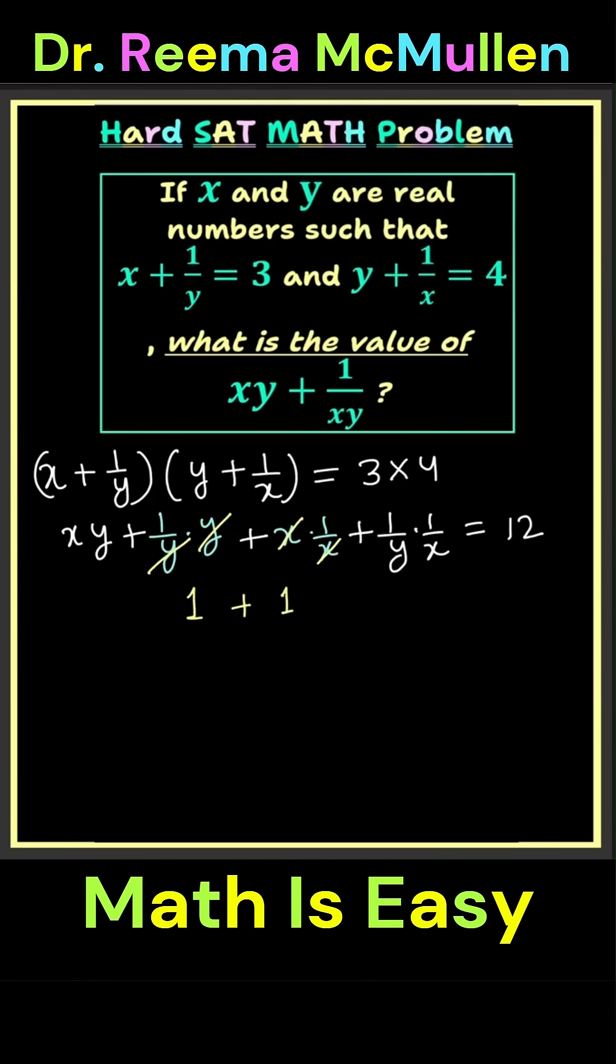So what do we have left? We have xy plus 1 plus 1 plus 1 over yx. Now y times x is the same as x times y, so we can go ahead and write this as xy equals 12.